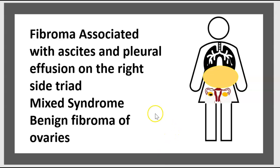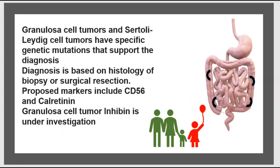Fibroma — think about Meigs syndrome: pleural effusion on the right side, ascites, and fibroma of the ovary. Granulosa cell tumors and Sertoli-Leydig cells have specific genetic mutations supporting diagnosis. Diagnosis is based on histology from biopsy or surgical resection. Proposed markers include CD56 and calretinin; inhibin for granulosa cell tumors is under investigation.